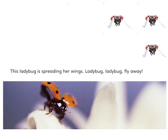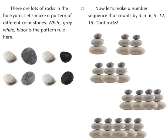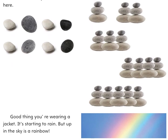This ladybug is spreading her wings — ladybug, ladybug, fly away! There are lots of rocks in the backyard. Let's make a pattern of different colored stones: white, gray, white, black is the pattern rule here. Now let's make a number sequence that counts by 3: 3, 6, 9, 12, 15. That rocks!